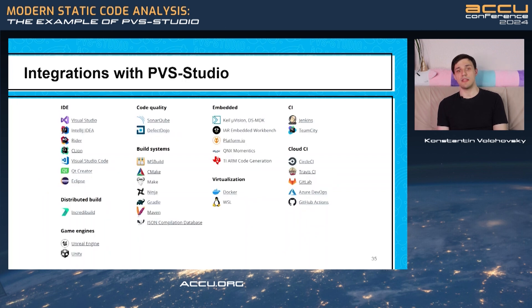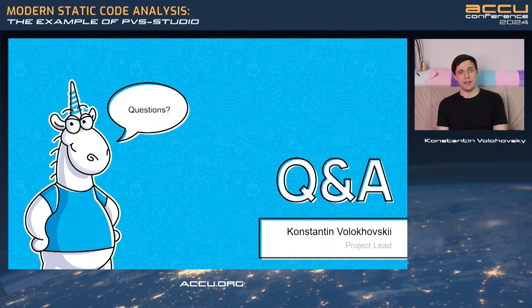For example, you can take a look at the integrations supported by PVS Studio. You can work with our analyzer right in Visual Studio, CLion, Qt Creator, or Visual Studio Code, or you can integrate our analyzer with make, cmake, or msbuild systems. Or you can use it with CI-CD tools, like GitHub, Jenkins, or SonarQube. And on that note, I'm happy to answer your questions.